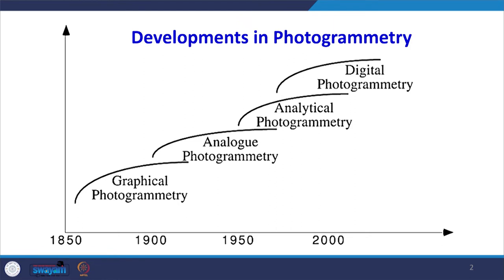After 1960, the digital era arrived where all hard copy prints and analog photographs were replaced by soft copy or digital photogrammetry. Once we are using digital photographs, we have to learn the use of photogrammetric software. A large number of photogrammetric software packages were developed so that we can very easily create various kinds of output from those digital photographs.